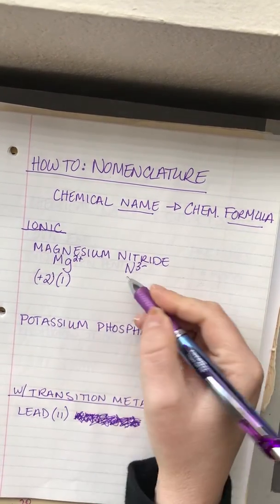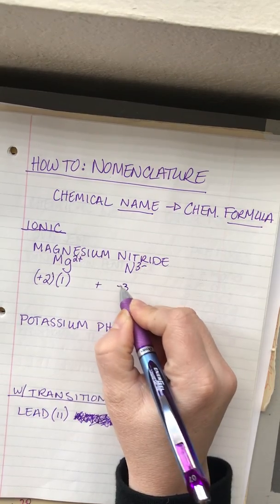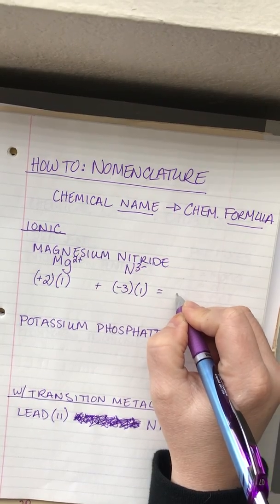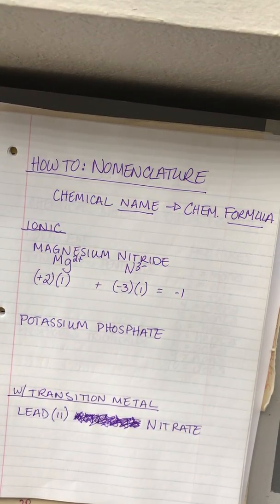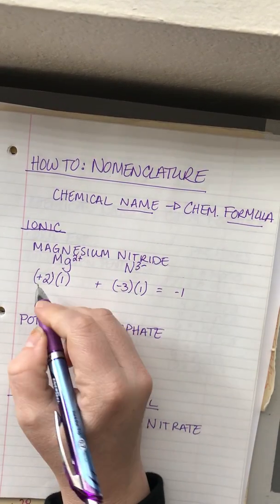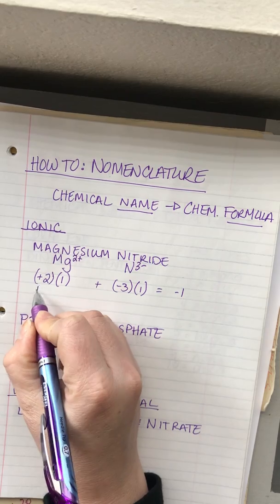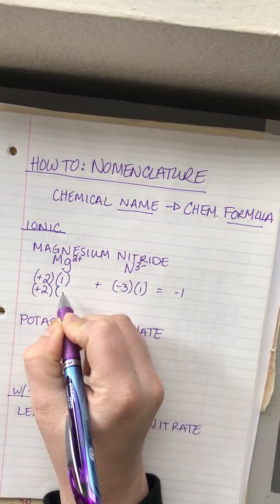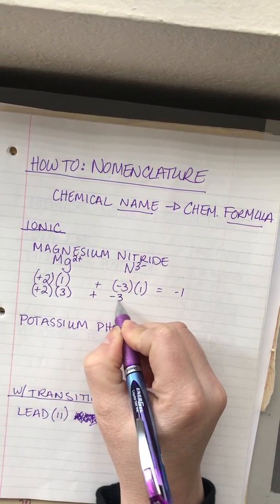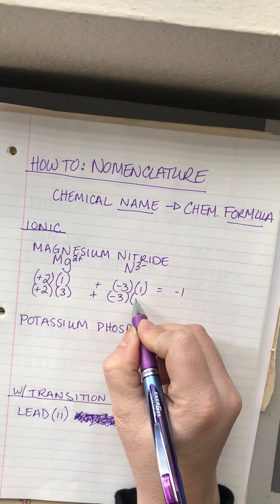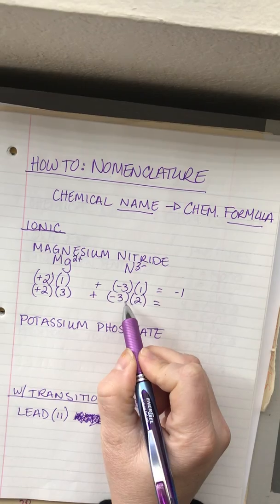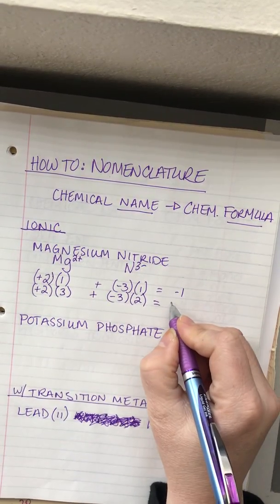If I start off with one magnesium ion at plus 2 and add that to one nitride ion at negative 3, I'll end up with a negative 1 charge. So in order to get the charges to equal zero, I'm going to need plus 2 times 3 plus negative 3 times 2.